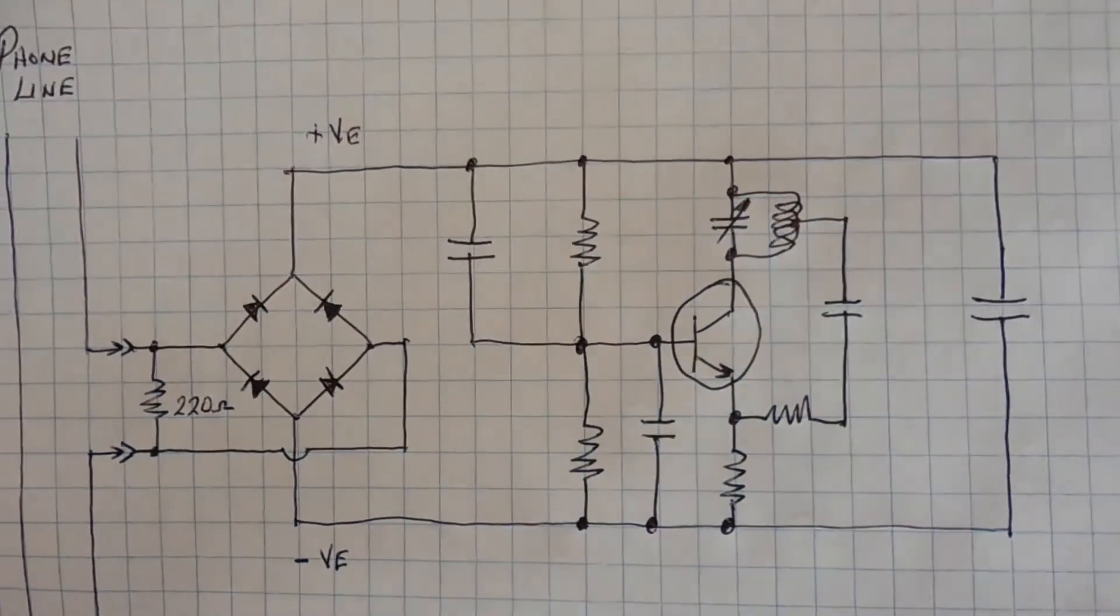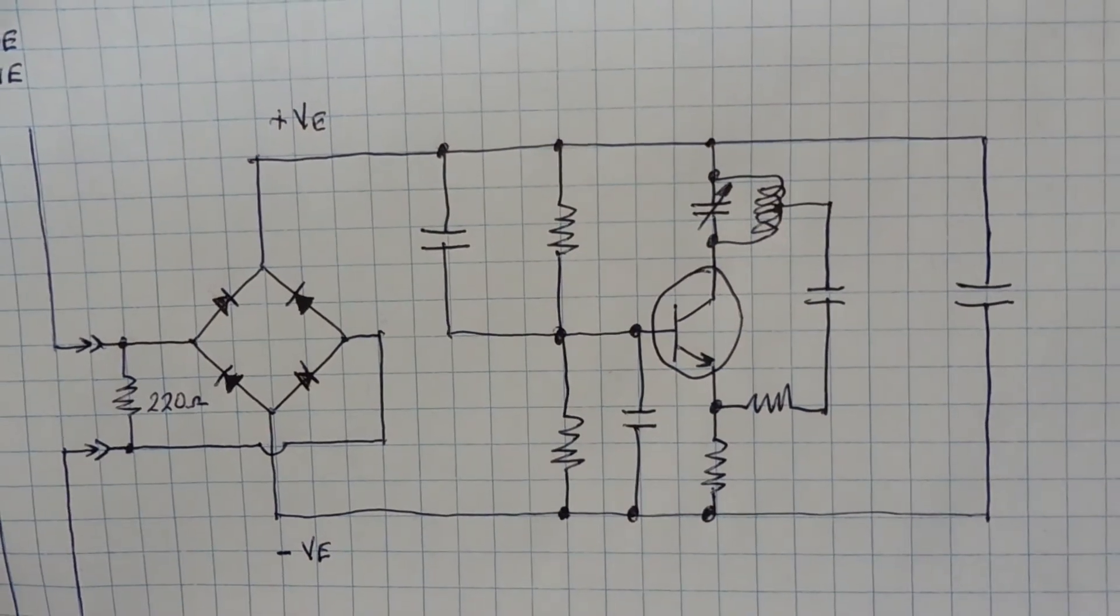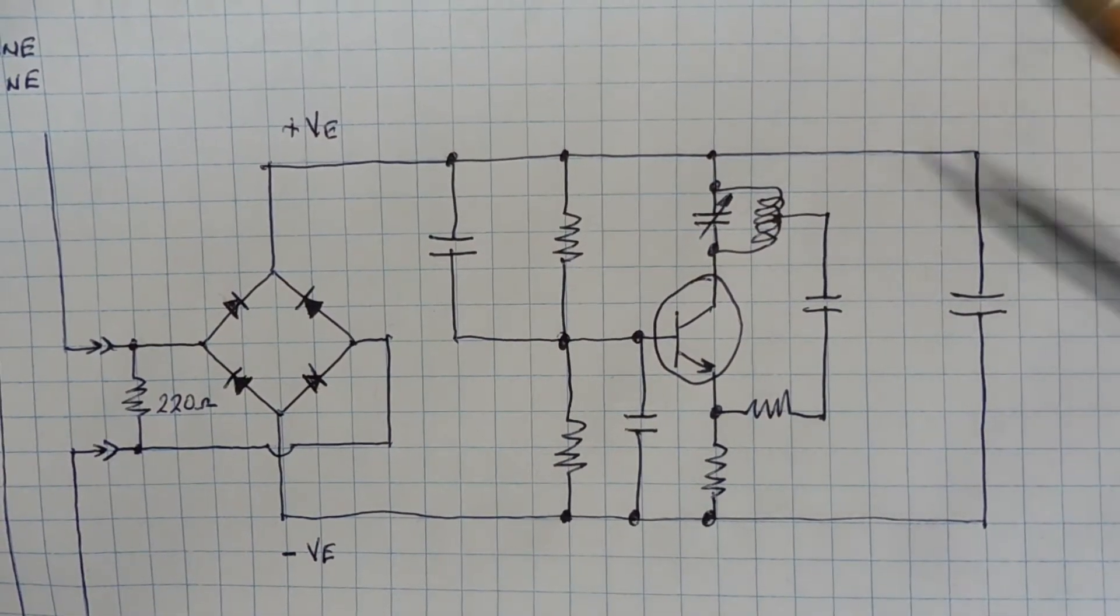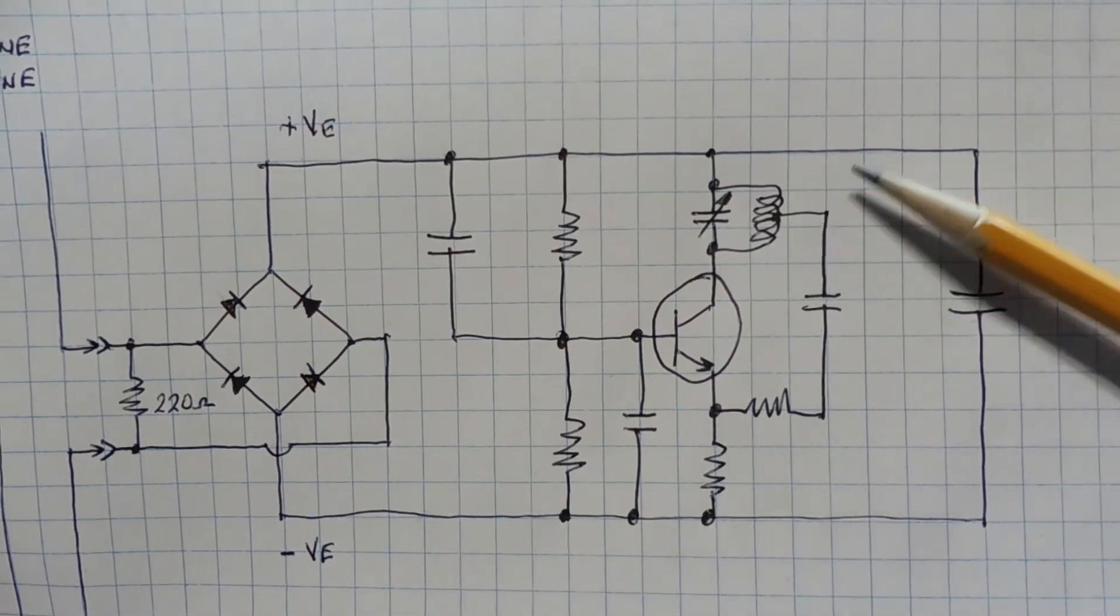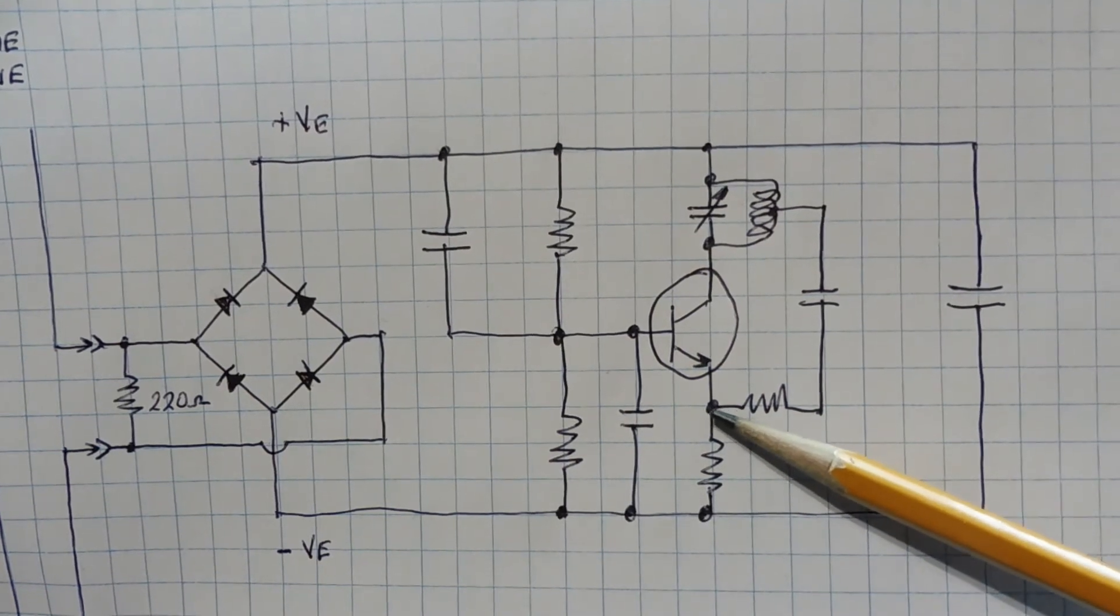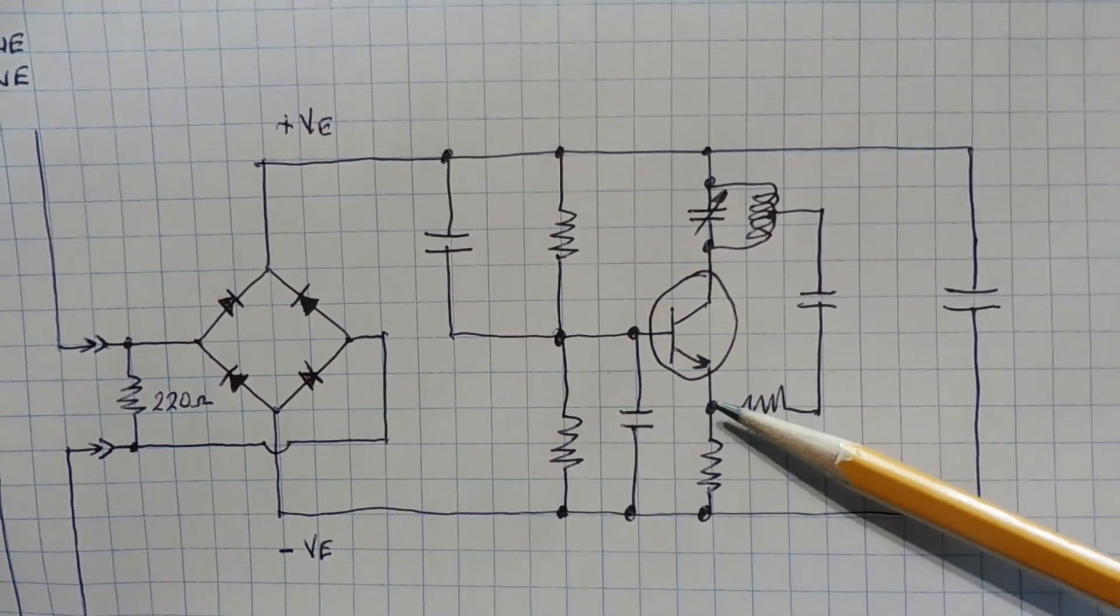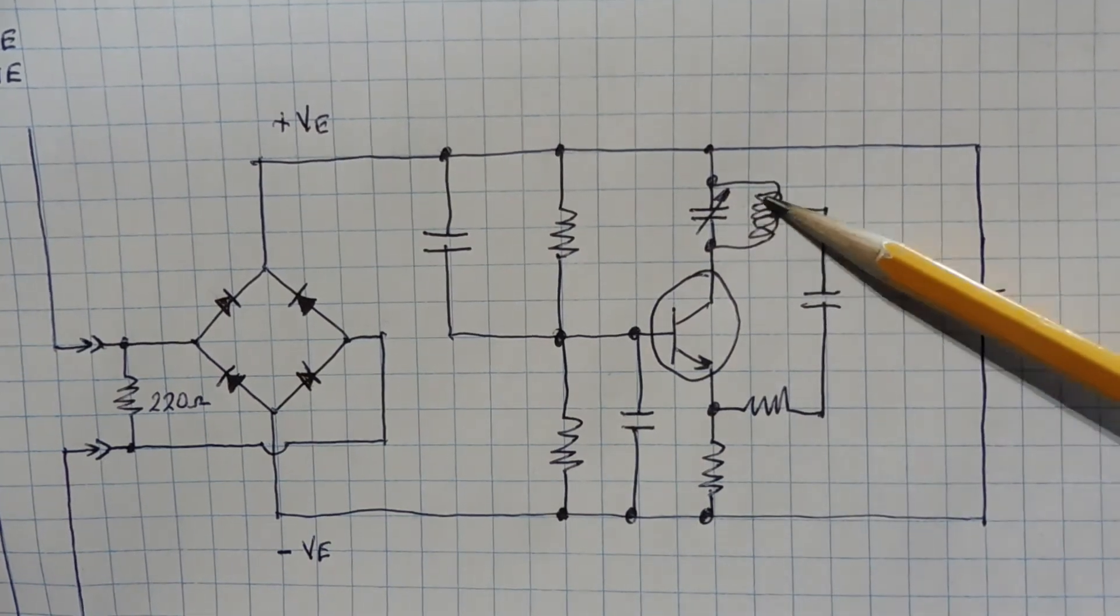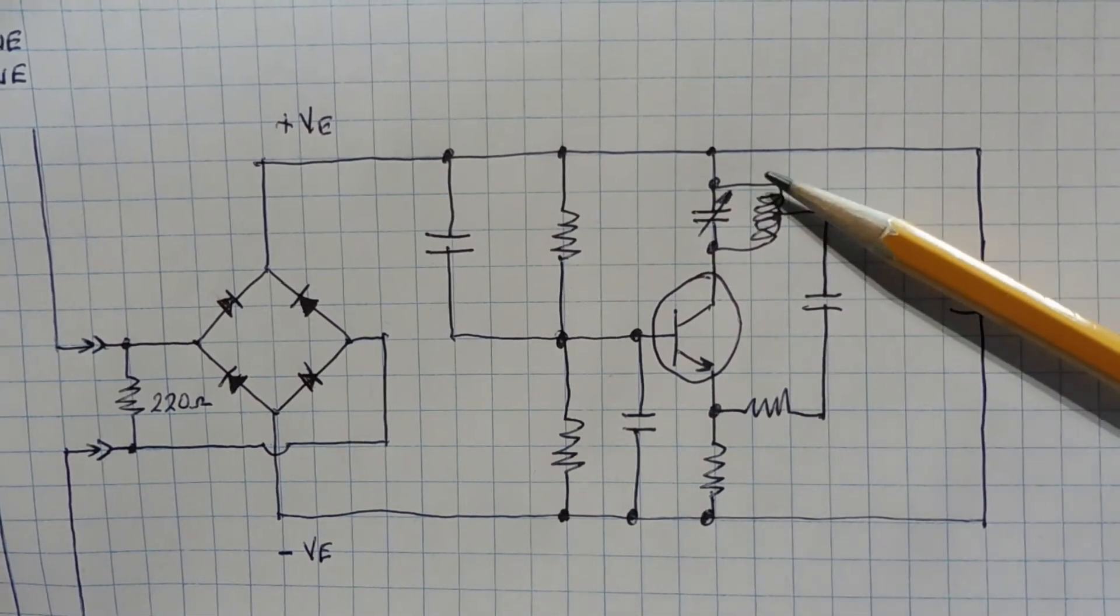This transistor is a Colpitts oscillator. Basically it's an amplifier with positive feedback. We have an LC circuit, our tank circuit, and we take a bit off the inductor and we feed it back into the emitter and that's our positive feedback and that will cause this circuit to oscillate. It will oscillate at the frequency of the LC components in the collector circuitry.